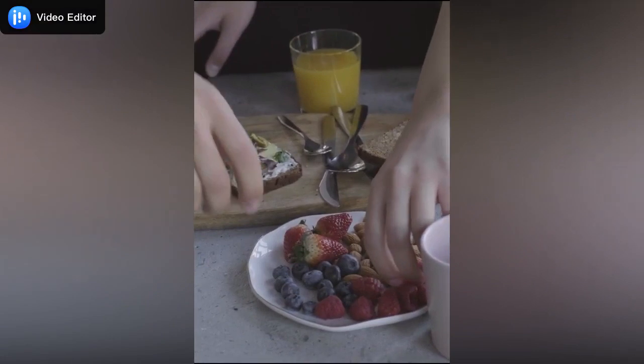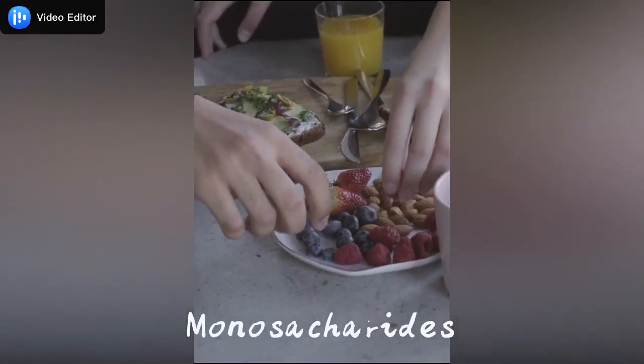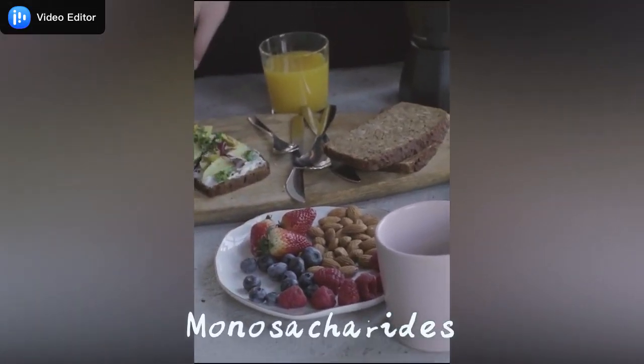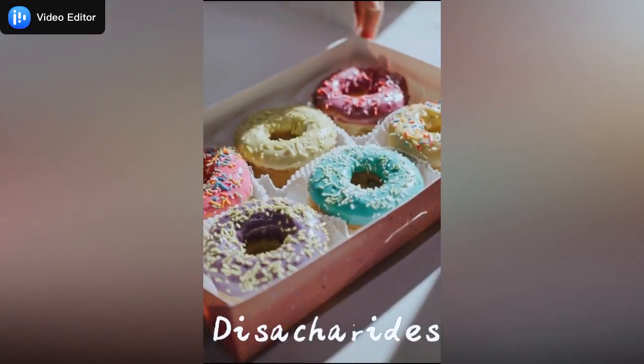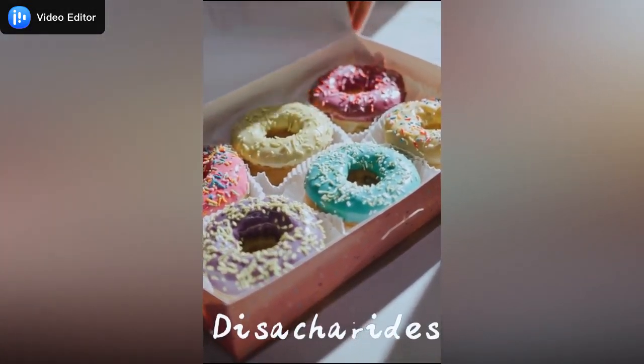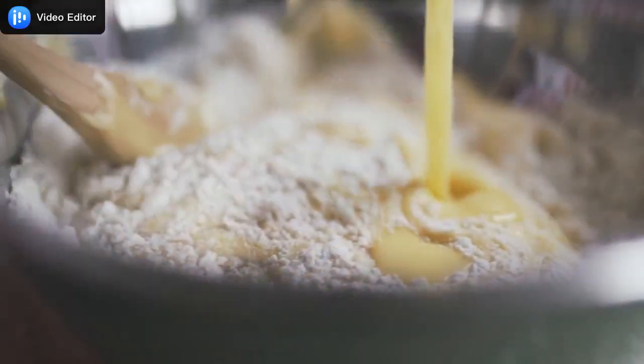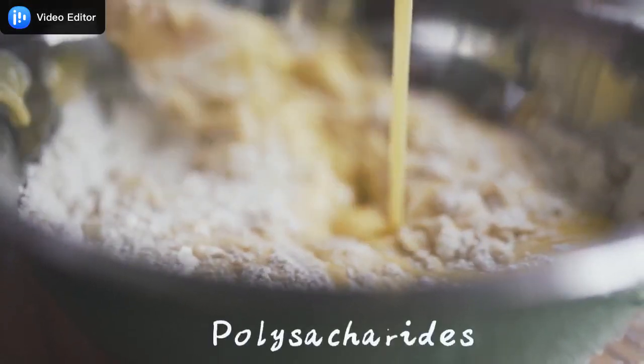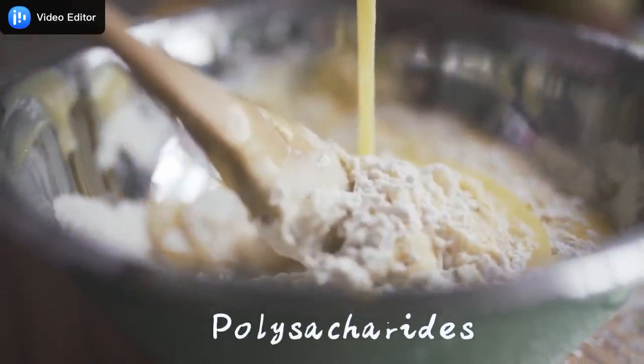The simpler carbohydrates are called monosaccharides, like glucose and fructose, which you can find in fruits. More complex ones are called disaccharides, like sucrose and lactose, which you can find in sugar and milk. And the really complex ones are polysaccharides, like starch and cellulose, which you can find stored in the liver or in plants.